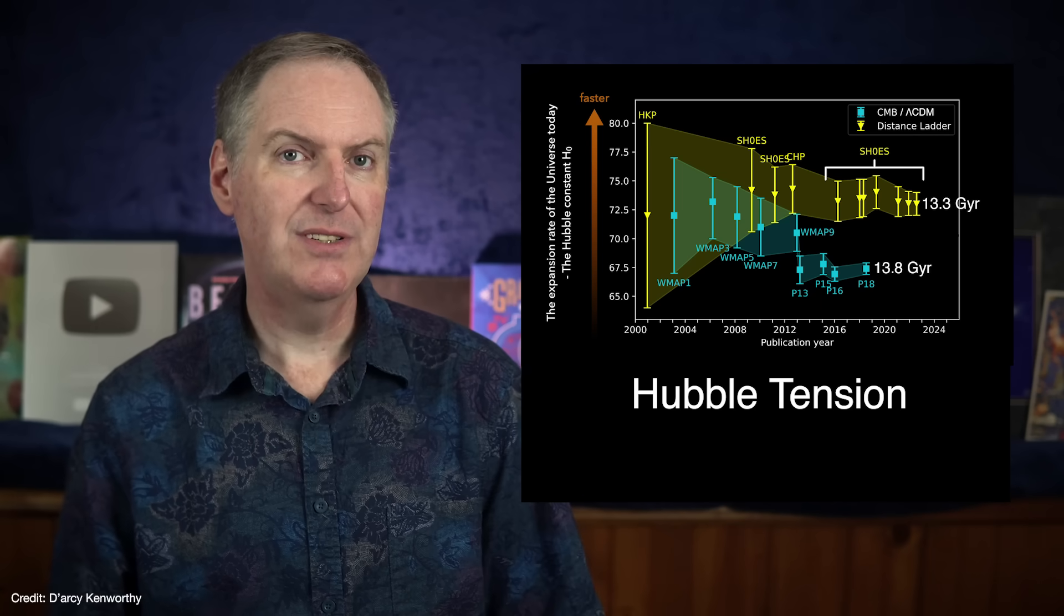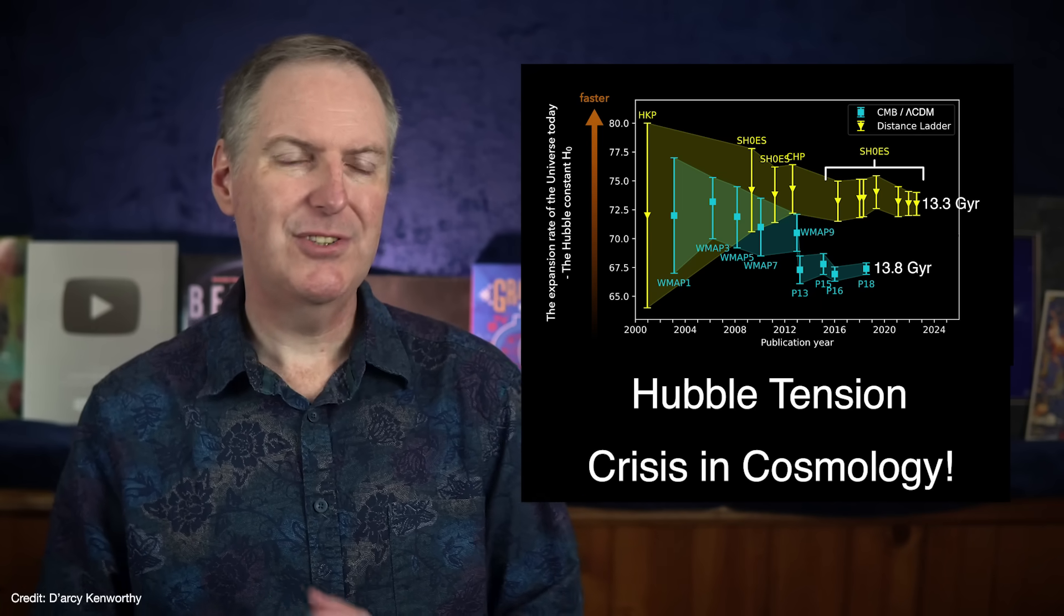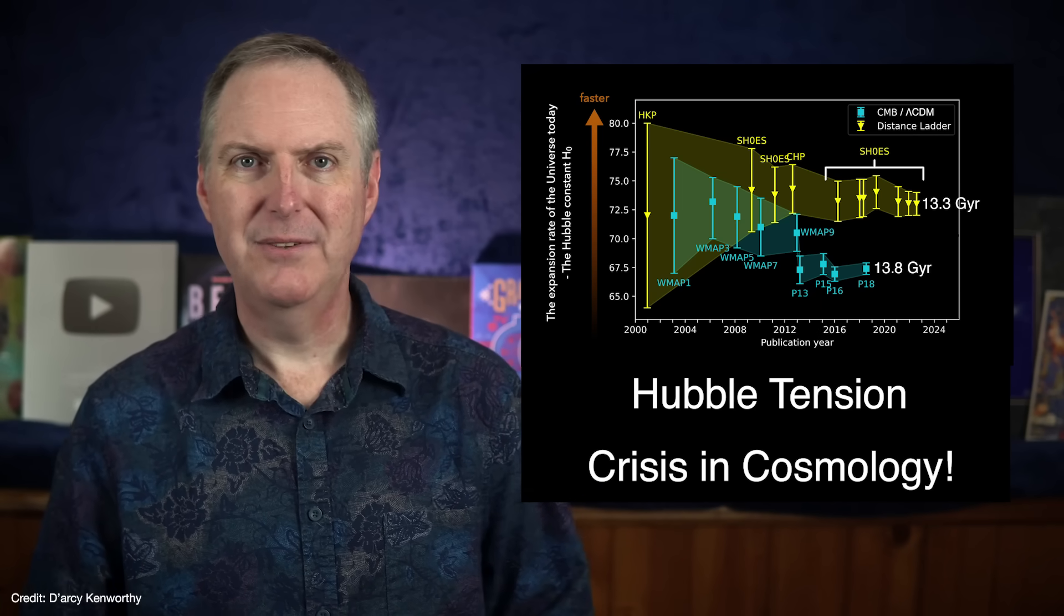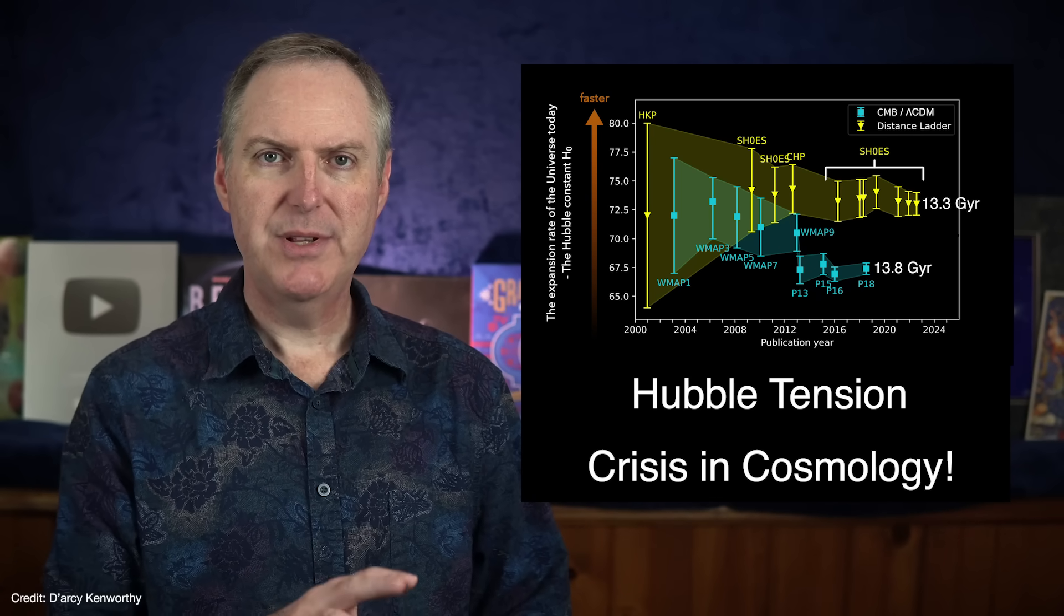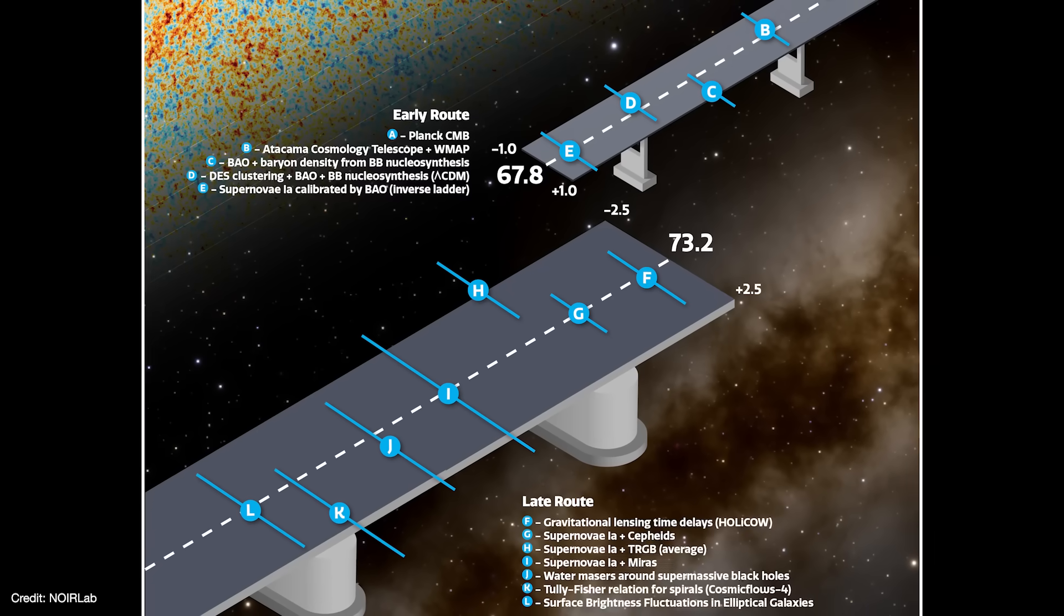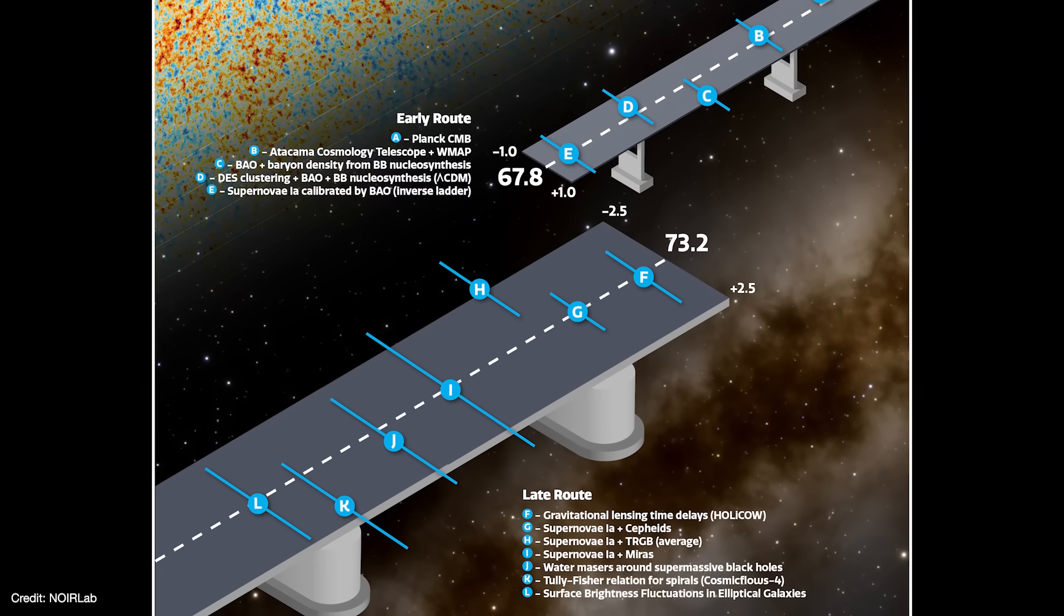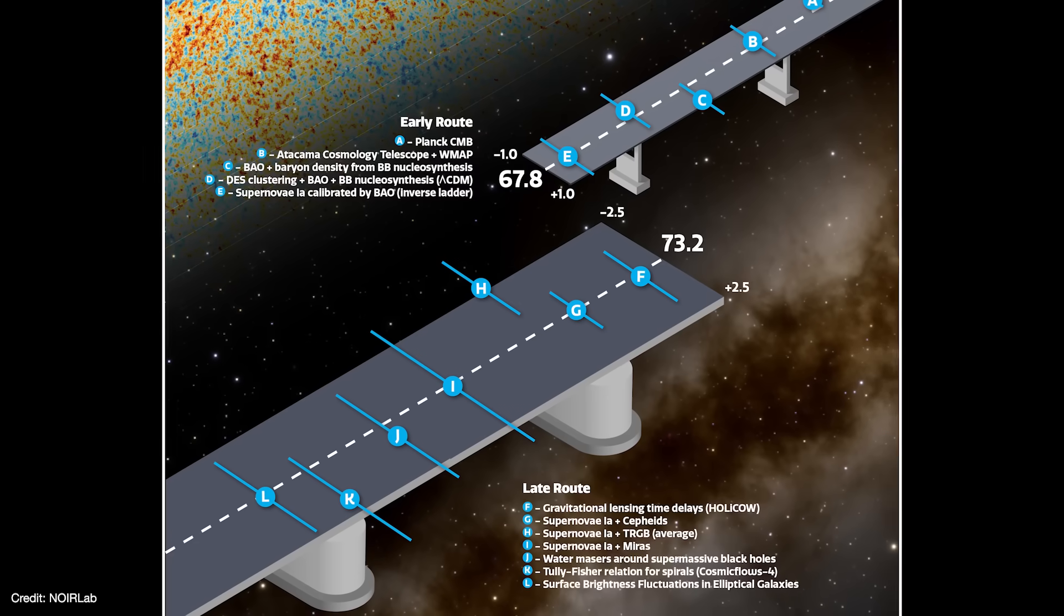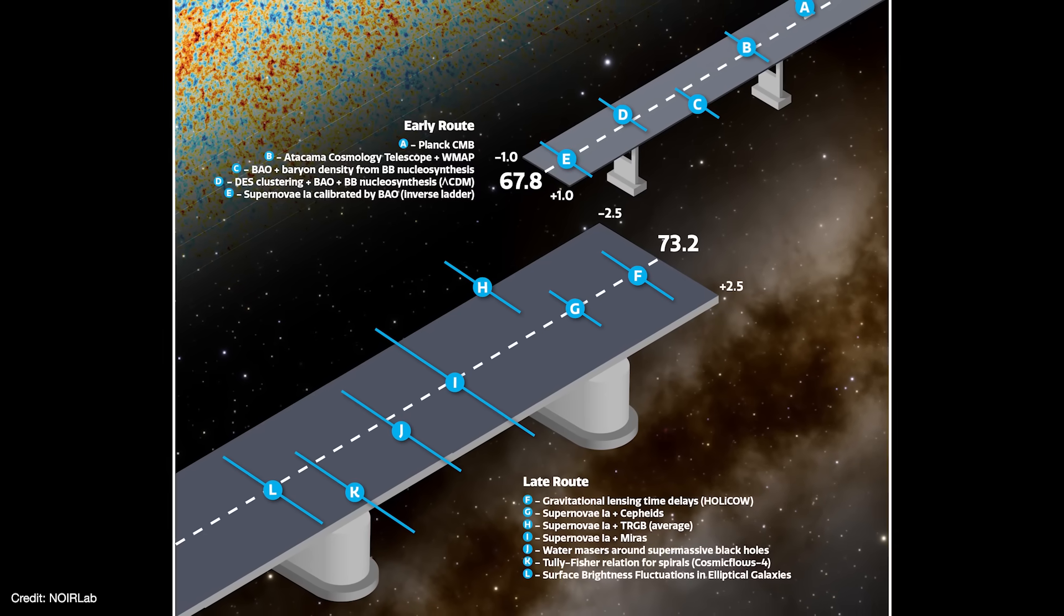This problem is called the Hubble Tension or the Crisis in Cosmology, and I should really save that for another video. But the short version is that our measurements to distant galaxies are based off of distance measurements to nearby galaxies. It's thought that those nearby measurements are probably being thrown off by dust in the Milky Way and in the galaxies themselves. If that's true, then JWST should be able to see through the dust and improve those measurements. And hopefully that will bring the age of the universe as measured from galaxies back in line from the age as measured from the cosmic microwave background. We'll see.